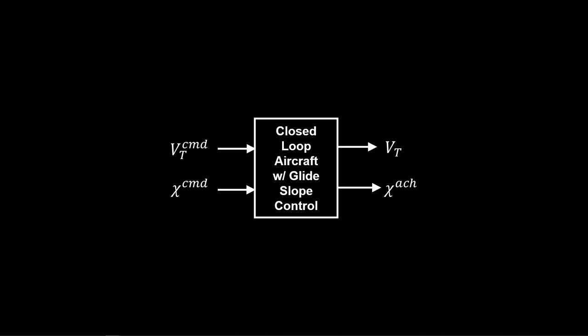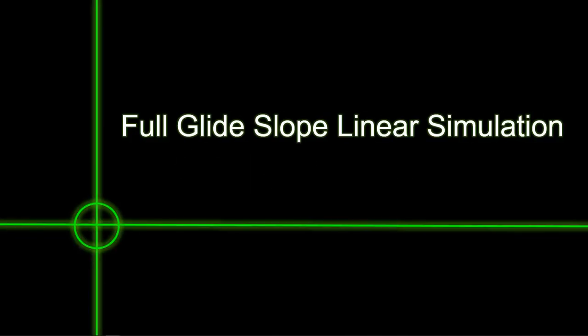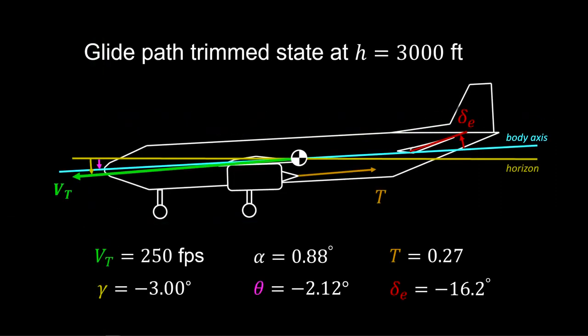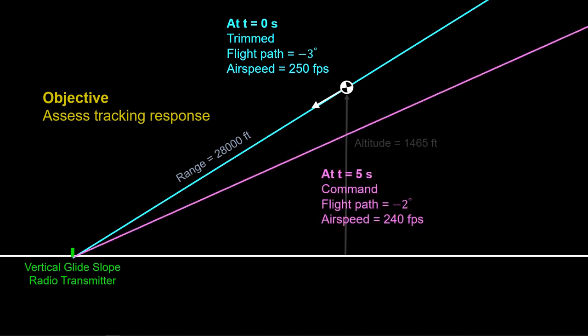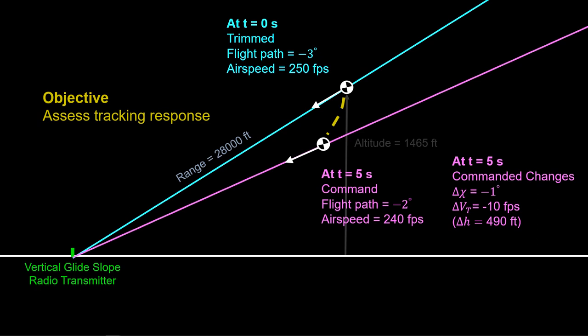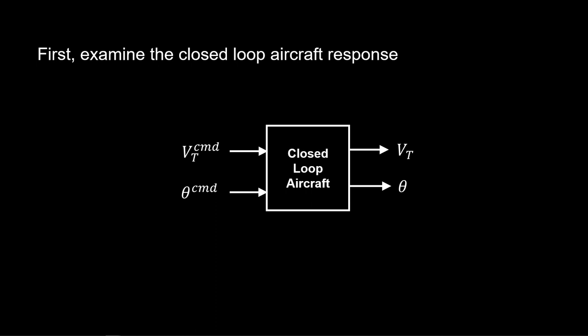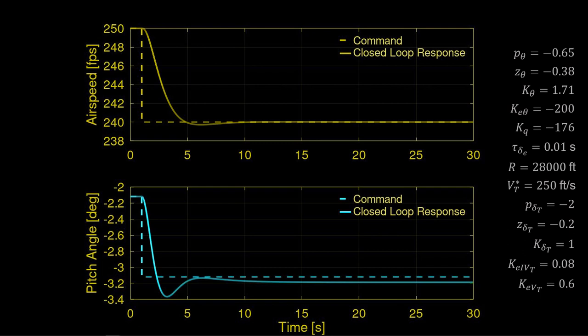We now simulate the glide slope and airspeed control system. Our simulation is based on the previously defined trim state. Our objective is to assess tracking response. We start on the glide path at a trimmed condition at 28,000 feet of range. At five seconds, a one-degree change to the glide path is commanded, with a reduced airspeed of 240 feet per second — so the aircraft must descend 490 feet onto the commanded glide path. First, we examine just the closed-loop aircraft response where there's no glide slope coupling, and we observe excellent tracking.